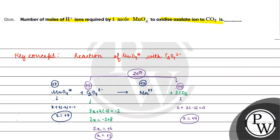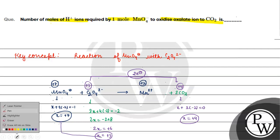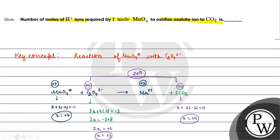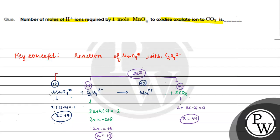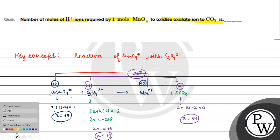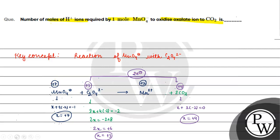For the reduction of permanganate: Mn goes from oxidation state +7 to +2. How many electrons are involved in this reduction? That is a decrease of 5, so 5 electrons are involved.